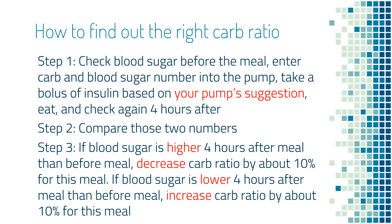To find the right carb ratio, first check blood sugar right before a meal. Enter the carb number and blood sugar number into the pump, take a bolus of insulin according to the pump's suggestion, eat, and then check blood sugar again in four hours. Compare those two blood sugar numbers: if blood sugar is higher four hours after the meal than before, you are getting too little insulin.